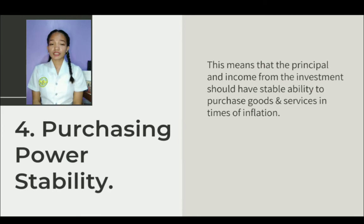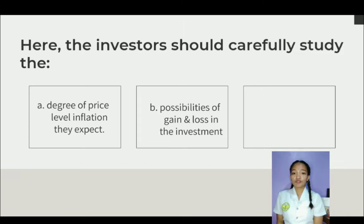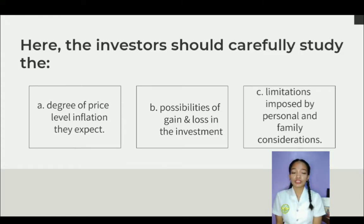Fourth is purchasing power stability. This means that the principal and income from the investment should have a stable ability to purchase goods and services in times of inflation. The investor should carefully study the degree of price level inflation they expect, the possibilities of gain and loss in the investment, and limitations imposed by personal and family considerations. Investors need to ensure that the return on their investment is consistent so that they can still make purchases of the goods and services they wish to buy during inflation.